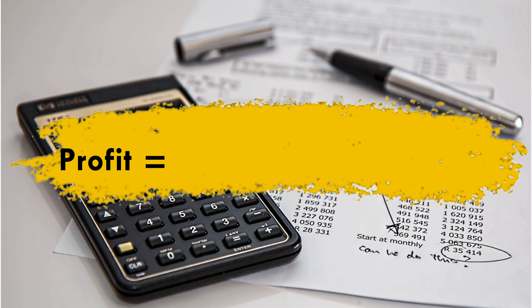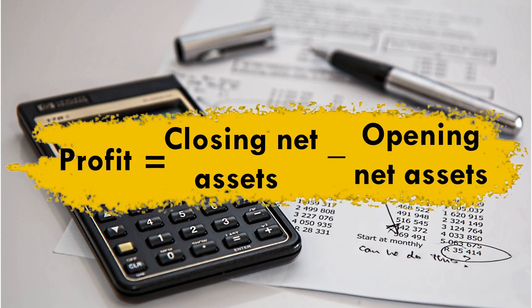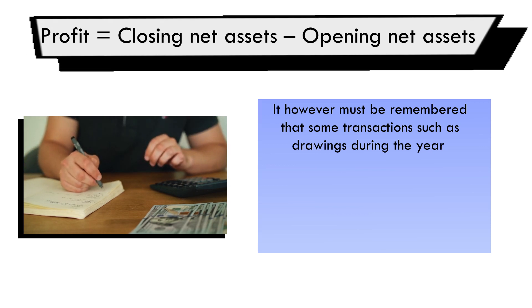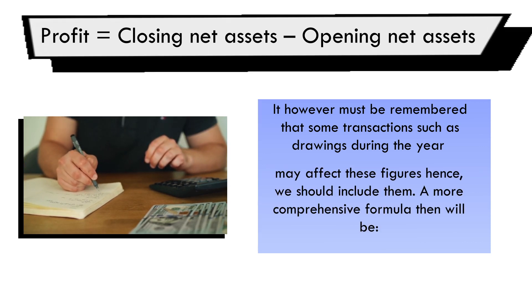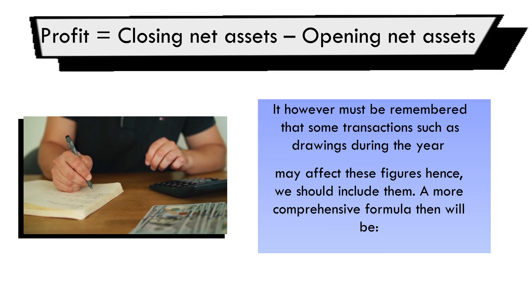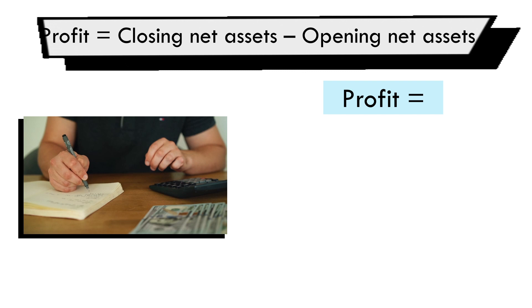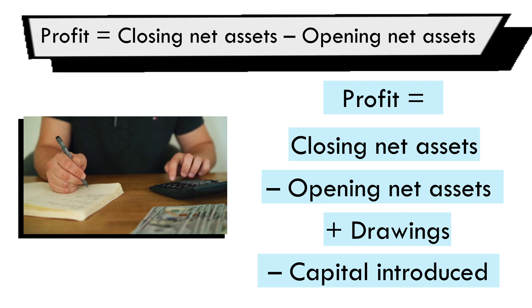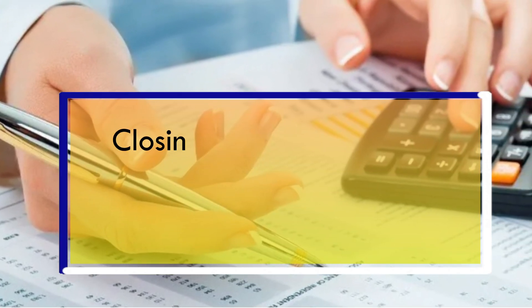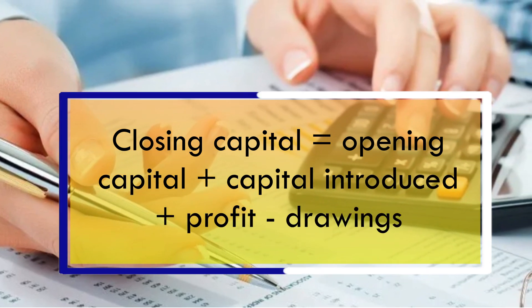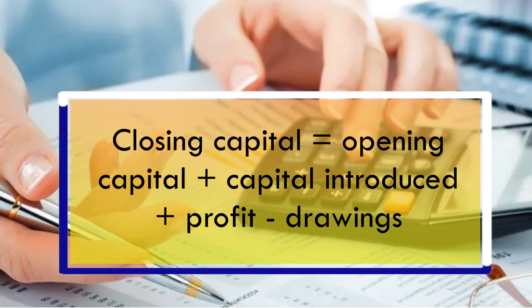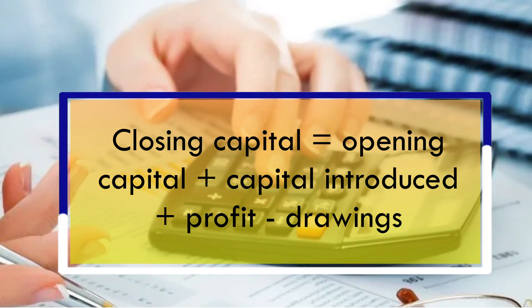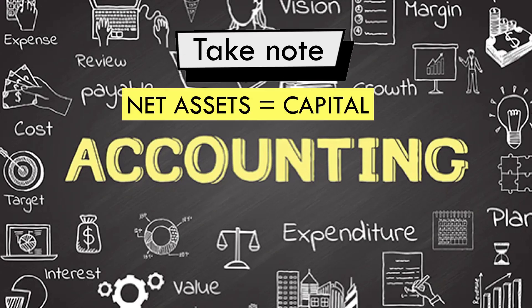So profit equals closing net assets minus opening net assets. It must however be remembered that some transactions such as drawings during the year may affect the figures, hence we should include them. A more comprehensive formula will be: profit equals closing net assets minus opening net assets plus drawings minus capital introduced. This is based on the fact that the closing net assets, or closing capital at the end of the year, is equivalent to opening net assets plus whatever capital was introduced during the year plus any profit made minus any drawings.